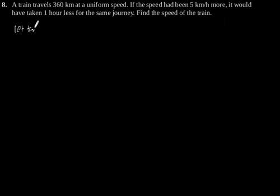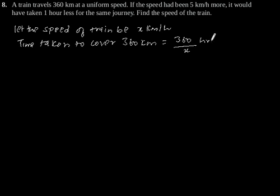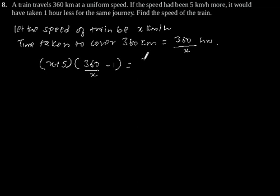Let the speed of the train be x km per hour. Time taken to cover 360 km is equal to 360 by x. So according to the information given in the question, we will get: (x + 5) into (360 by x minus 1) is equal to 360.